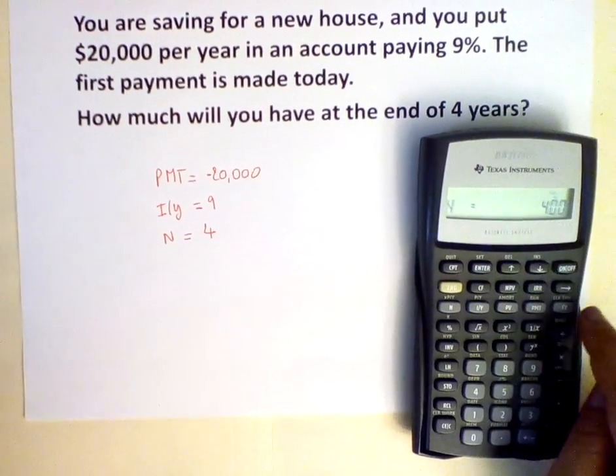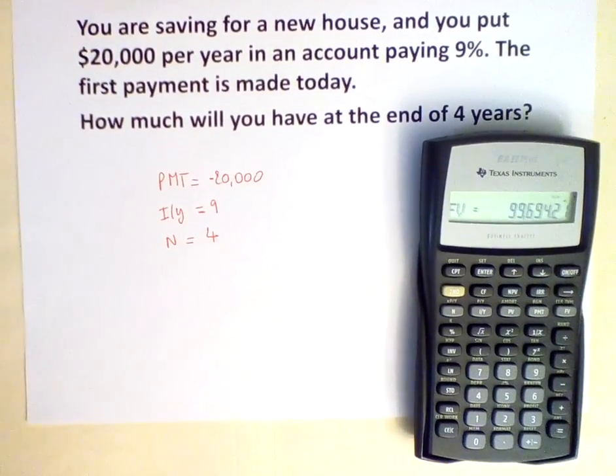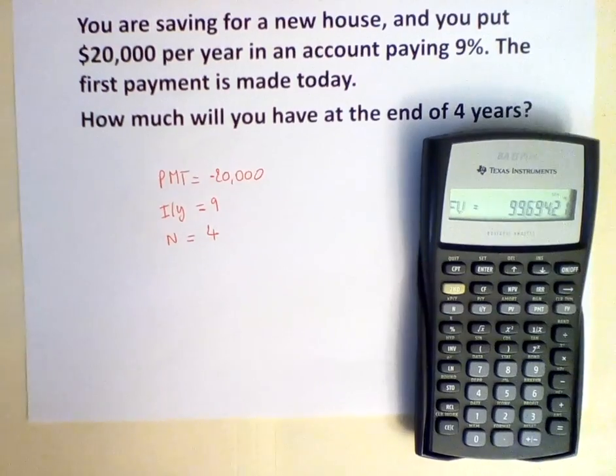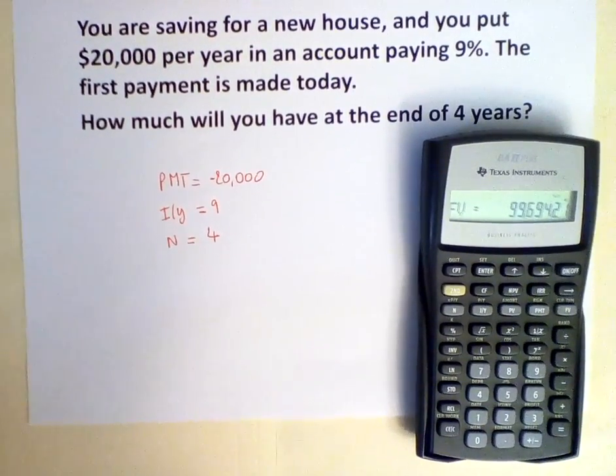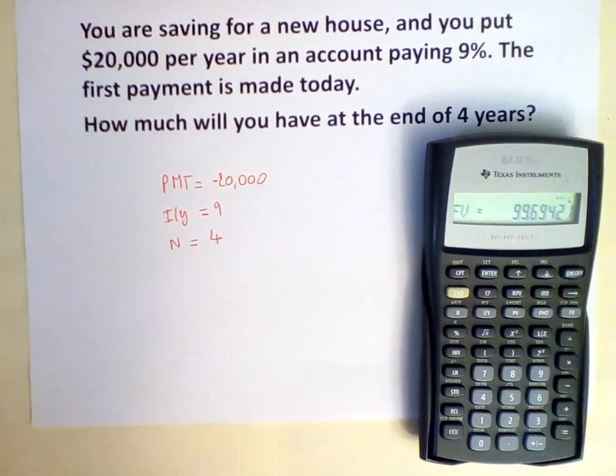Now we compute for the future value. We can see that the future value of this annuity is $99,694.21.